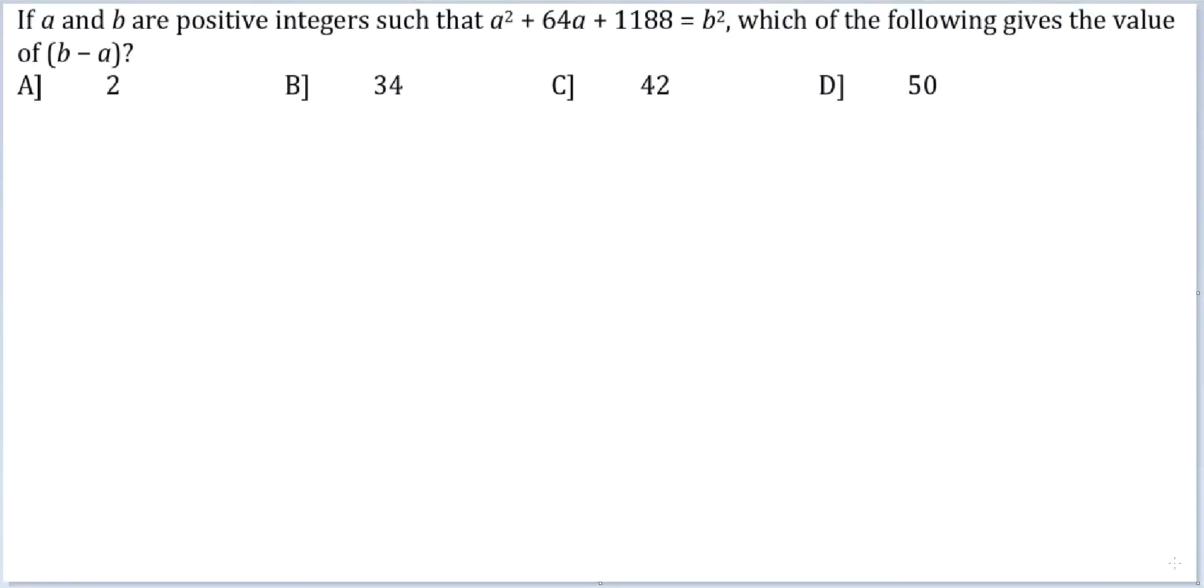Let's look at this question. If a and b are positive integers such that a² + 64a + 1188 = b², which of the following gives the value of b - a?